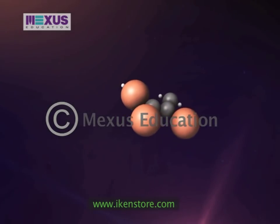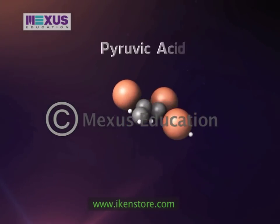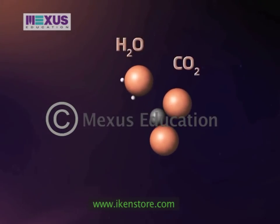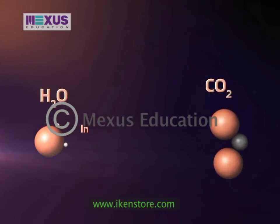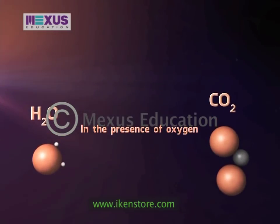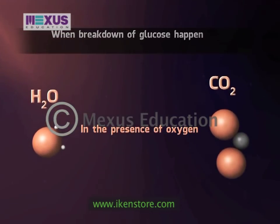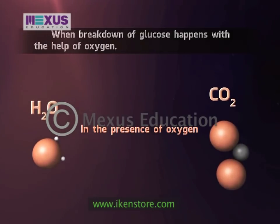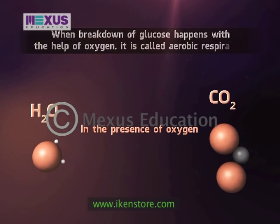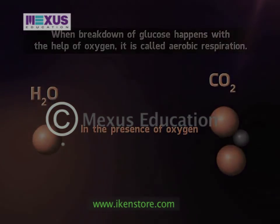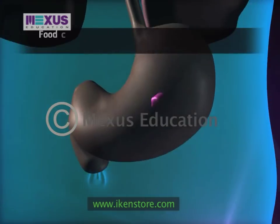Through a process called glycolysis, glucose is converted to pyruvic acid, which breaks down into water and carbon dioxide with the help of oxygen. When breakdown of glucose happens with the help of oxygen, it is called aerobic respiration.